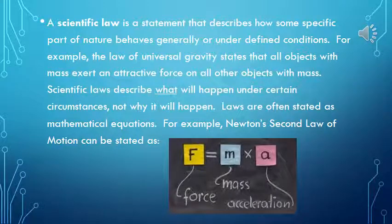A scientific law is a statement that describes how some specific part of nature behaves generally or under defined conditions. For example, the law of universal gravity states that all objects with mass exert an attractive force on all other objects with mass. Scientific laws describe what will happen under certain circumstances, not why it will happen. Laws are often stated as mathematical equations — for example, Newton's second law of motion: force equals mass times acceleration.